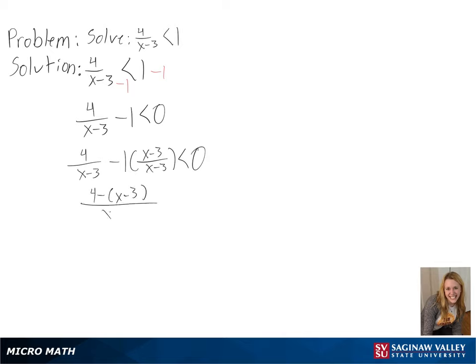So, we will get 7 minus x over x minus 3 is less than 0. Then, we will need to identify the zeros of the left side expression and put them on a number line to determine our test regions and label them as positive or negative.